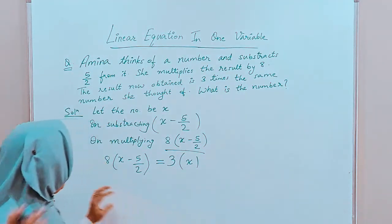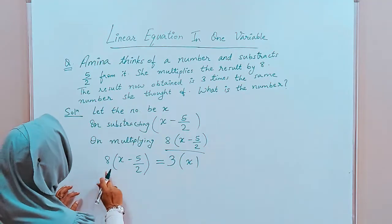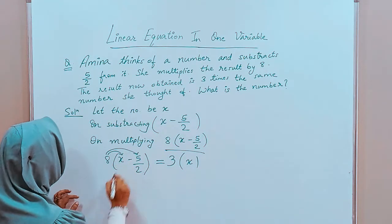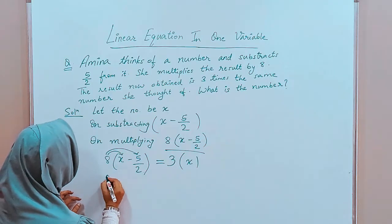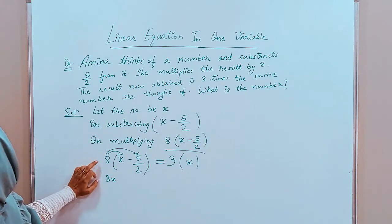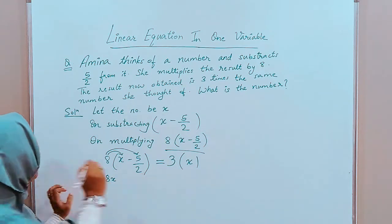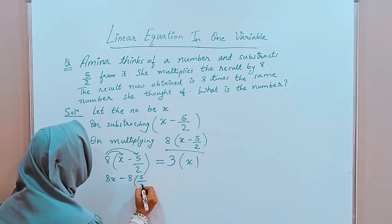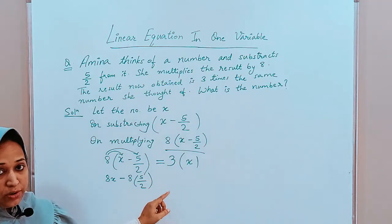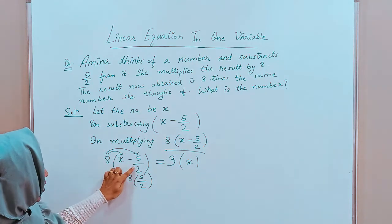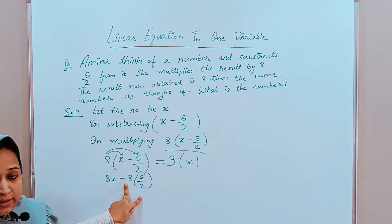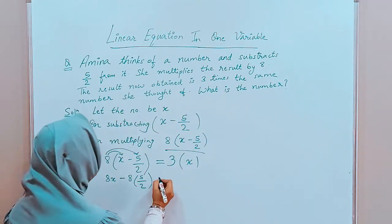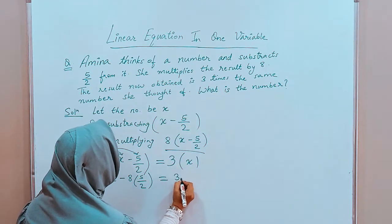Now, here is the bracket. So, you have to multiply 8 with both the terms. 8 into x, 8x. Then, plus into minus is minus, 8 into 5 by 2. You can do 8, 5 is 40 also. But, since 8 is multiple of 2, I will first cancel the number and then multiply. This saves your time. Is equal to 3 into x, 3x.